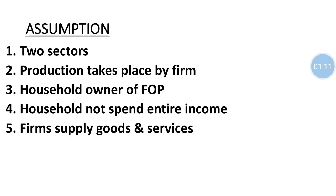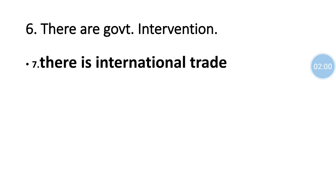The four-sector model is part of an open economy. The assumptions of the four-sector model are: there are two sectors — household and firm; production takes place by firm; household is the owner of factors of production — land, labour, capital, and entrepreneur. Household will not spend entire earnings on goods and services; some money will be saved or used to import goods from other nations. There is also government intervention in the form of taxation and expenditure, and international trade takes place.